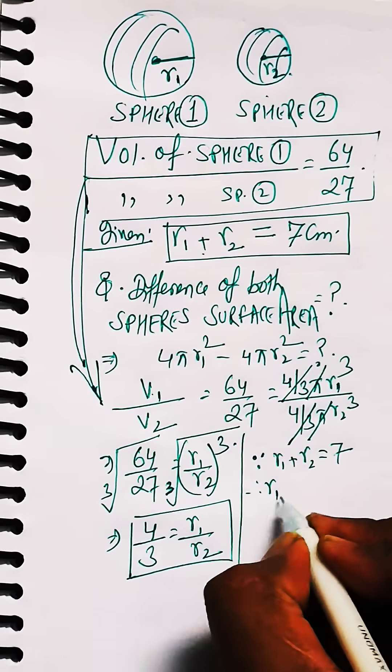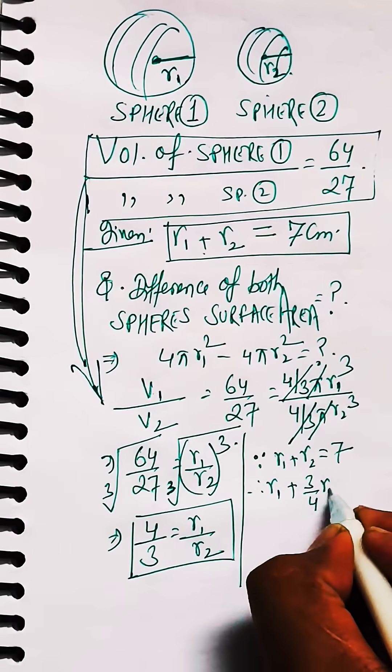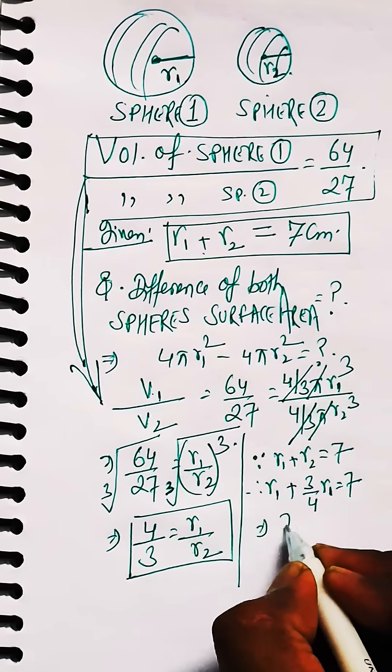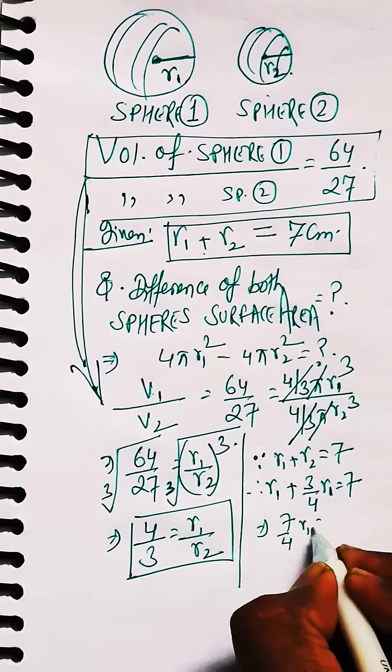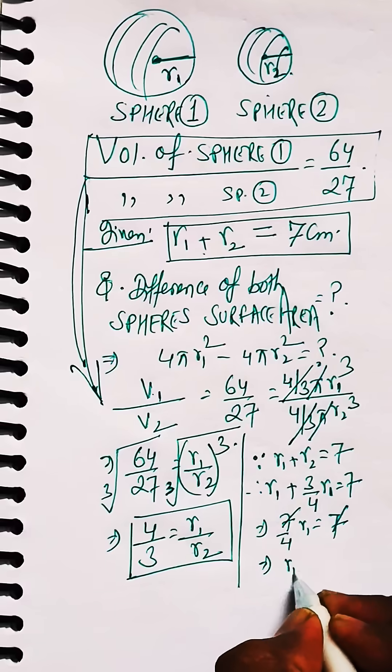And another relation which is given is r1 plus r2 equals 7. Just substitute the value of r2 from the ratio to calculate the value of r1.